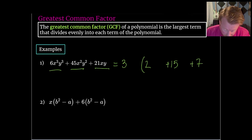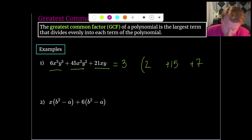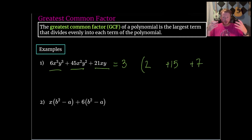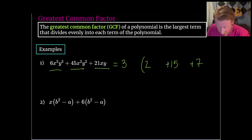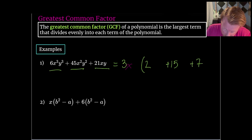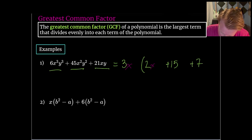Now that I've got the coefficients out of the way, let's take a look at the x variable. I'm looking for the most x's I can pull out of every term, and we're going to be limited to whatever the smallest power of x is. The first term has an x³, the second has an x², and the last one has just an x. So the most that we can pull out of everything is just that x. We will pull an x out to the front, and what's left behind in the first term is x².